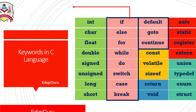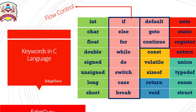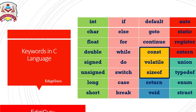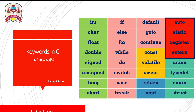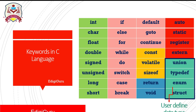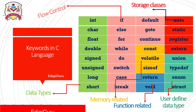The next 11 in the table are related to flow control. The next 3 are related to memory. The next 2 are related to functions. And out of the last 8, the first 4 are the storage classes and the last 4 are user-defined data types. All 32 keywords in C language are divided in a structured way so that you can easily memorize them.